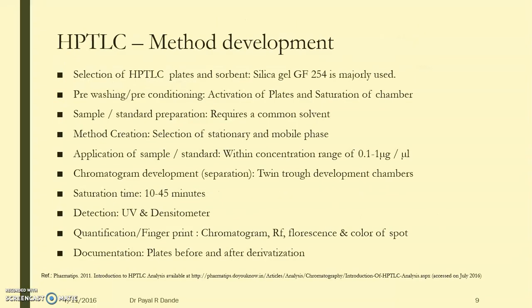Now let us understand the overall method development and the chronology used when making decisions while using HPTLC for analytical techniques. The first step is the selection of the HPTLC plate and solvent. Several adsorbents are available, and plates can be prepared or obtained in pre-coated form. For HPTLC, we normally use pre-coated silica gel plates. More than 80% of analyses are done using silica gel GF 254 plates.